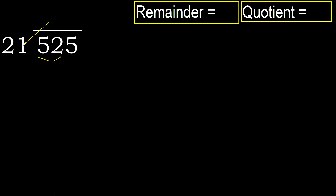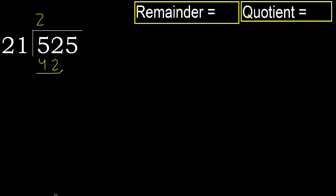21 multiplied by 3 is greater. Multiplied by 2: 42 is not greater, ok. Subtract. 52 minus 42 is 10.